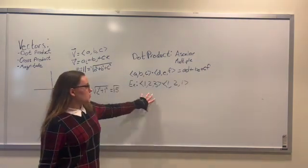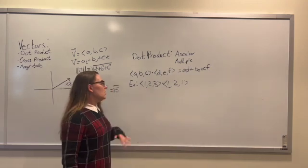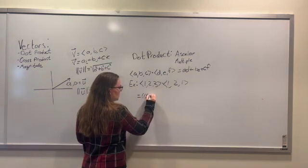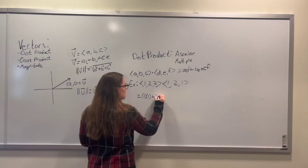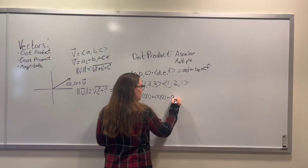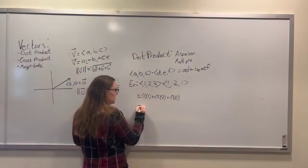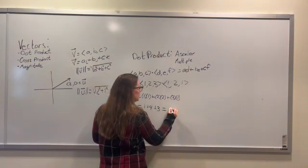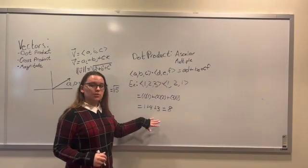So say we wanted to find the dot product between these two vectors, the vector 1, 2, 3 and the vector 1, 2, 1. So it would be 1 times 1 plus 2 times 2 plus 3 times 1, and then we just multiply that together, which is equal to 8. And that is the dot product between these two vectors.